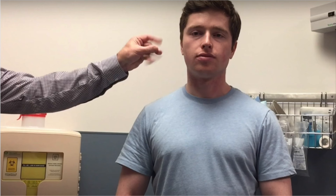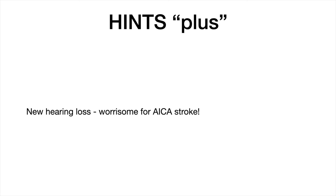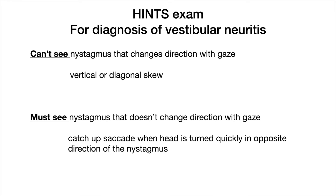The patient can't have a new hearing loss as determined by the finger rub test — just rub your fingers together outside their ears and make sure they don't have a new loss of hearing. That's the plus part of HINTS Plus, and a new hearing loss could indicate an anterior inferior cerebellar artery infarct.